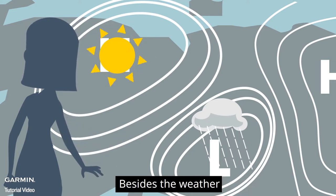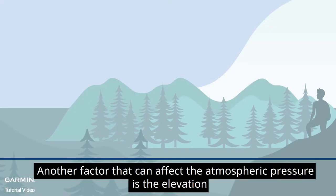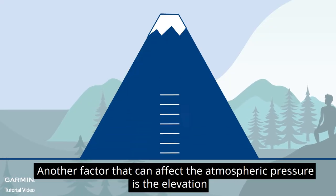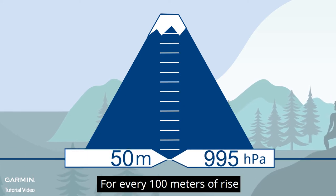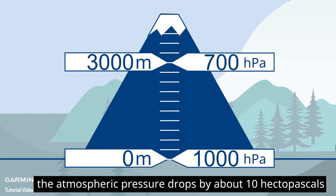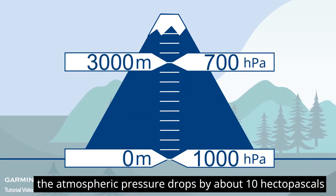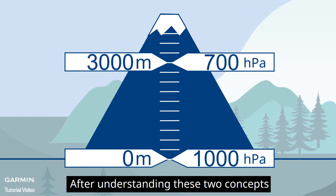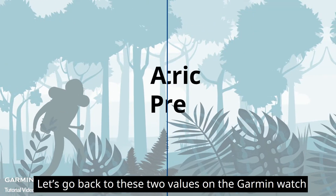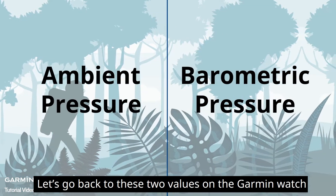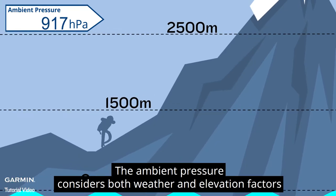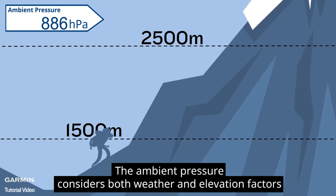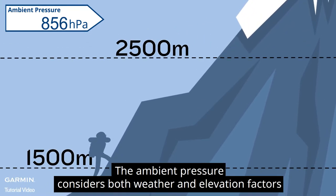If the atmospheric pressure of a place is higher, the weather might be more stable. Besides weather, another factor that can affect the atmospheric pressure is elevation — for every 100 meters of rise, the atmospheric pressure drops by about 10 hectopascals. After understanding these two concepts, let's go back to the two values on the Garmin watch: the ambient pressure and the barometric pressure.